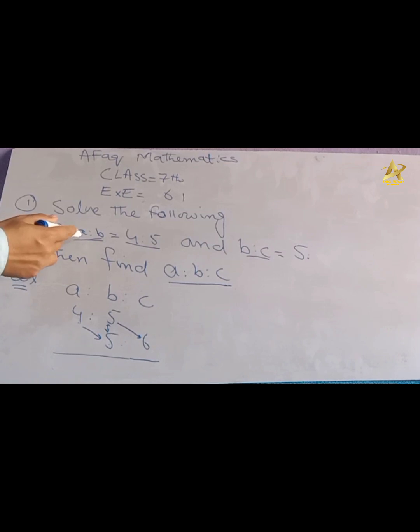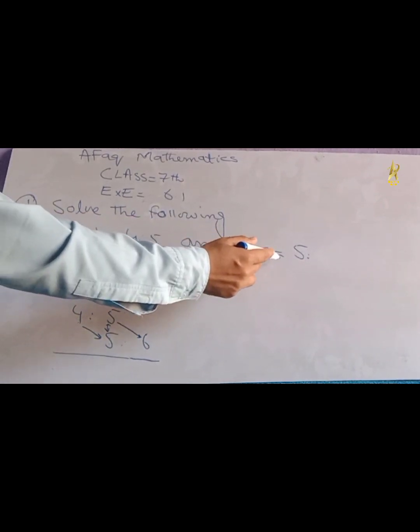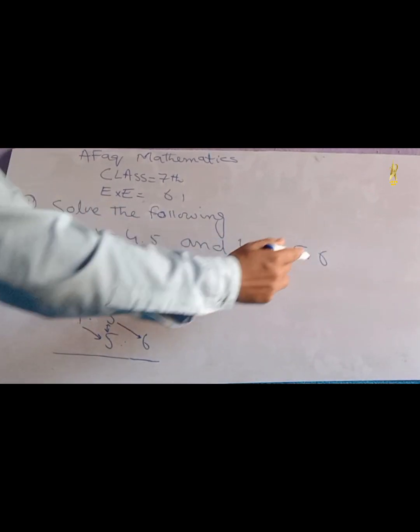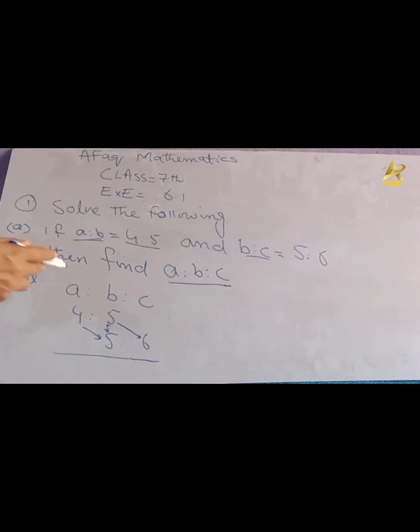Part A: If A ratio B is equal to 4 ratio 5, and B ratio C is equal to 5 ratio 6, then find A ratio B ratio C.